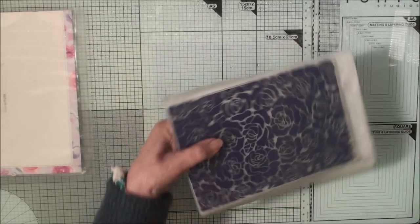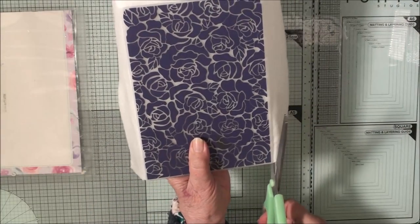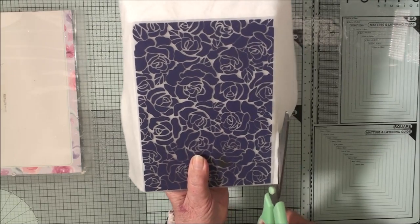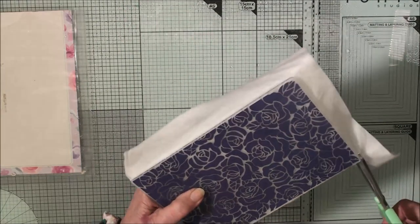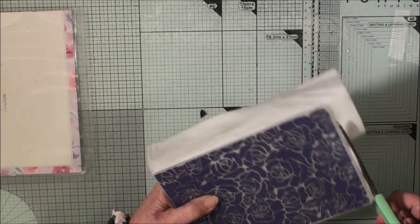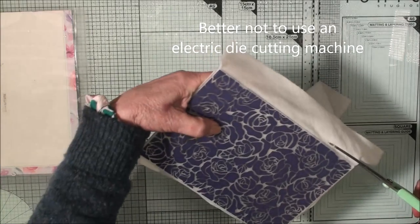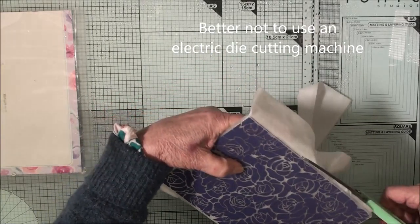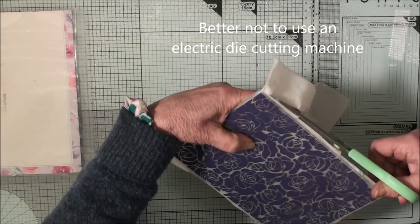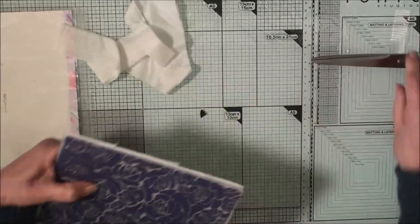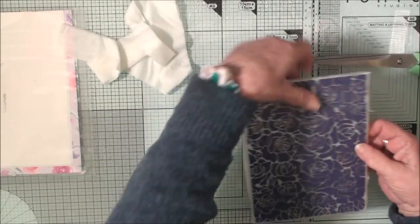So before I put mine through the machine, I'm just going to trim off the excess. Now you will find when you put this through your machine that it will squeeze out some of the water that's in the kitchen towels. So you will need to clean up, be prepared for a little bit of mess.